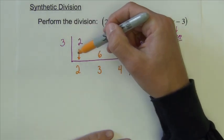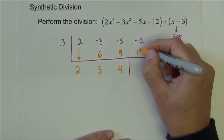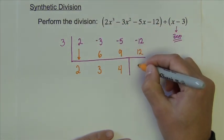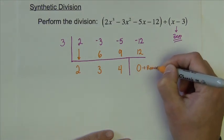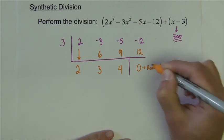Now we're going to multiply 3 times 4 together. That makes 12. We're going to add these together. Put it down here, and that's zero. So we have a remainder of zero.